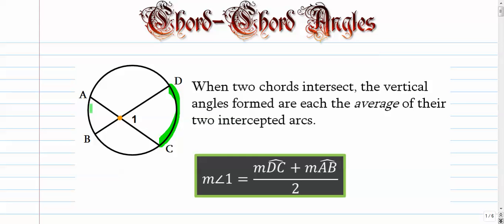When two chords intersect, some interesting things happen. This arc and this arc have a nice relationship with this angle. The relationship is right here in this box: if we're trying to find angle one, we look at this arc, add it together with this arc, and divide by two.